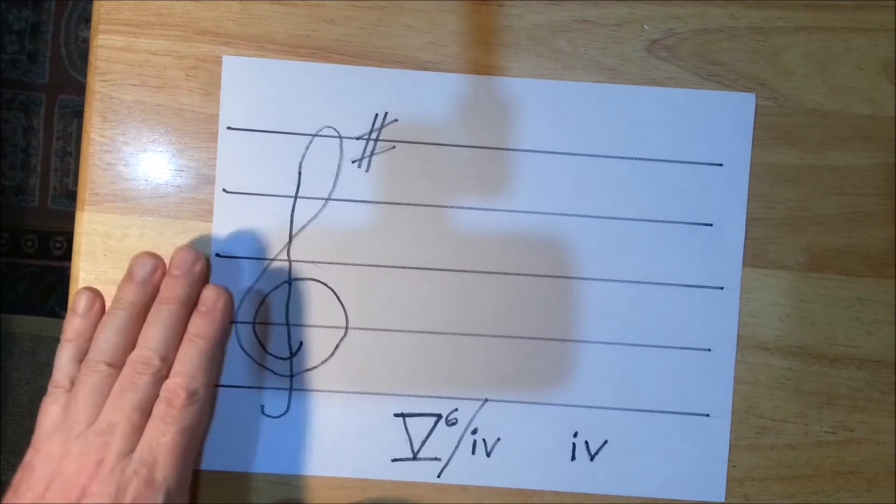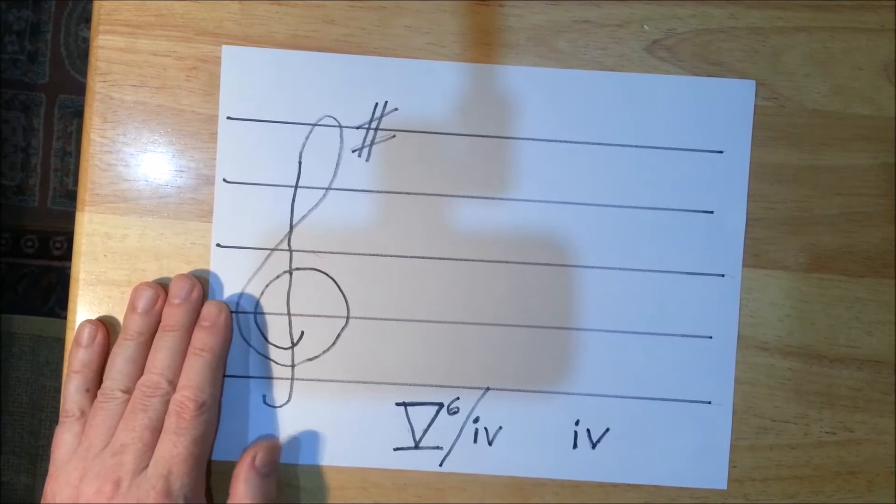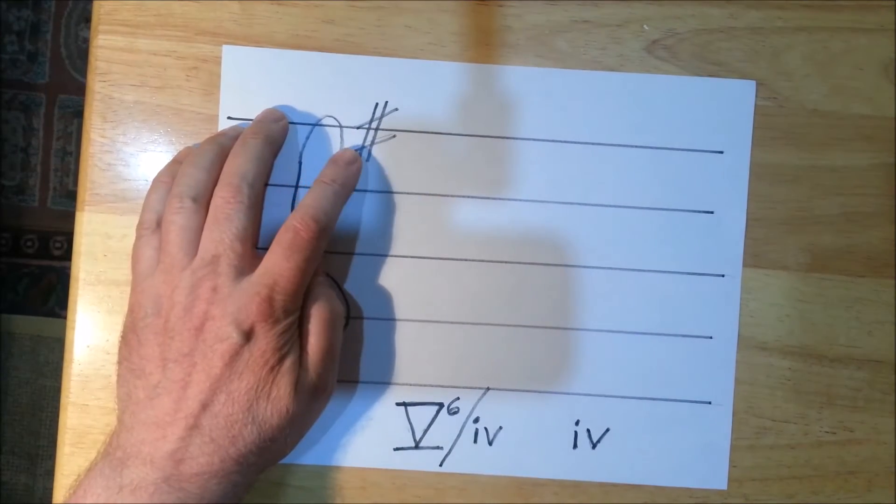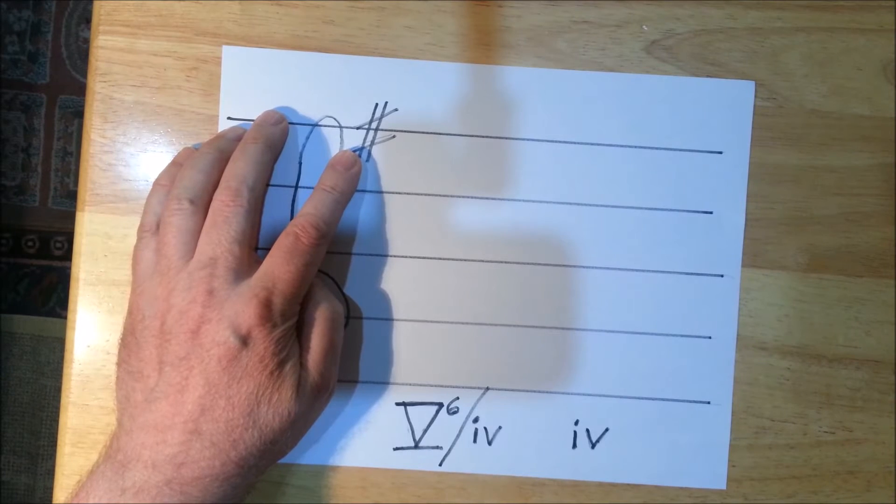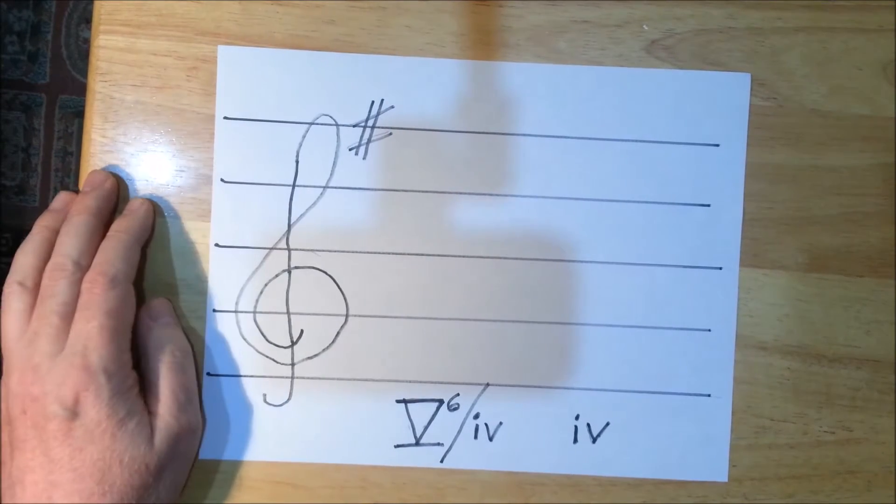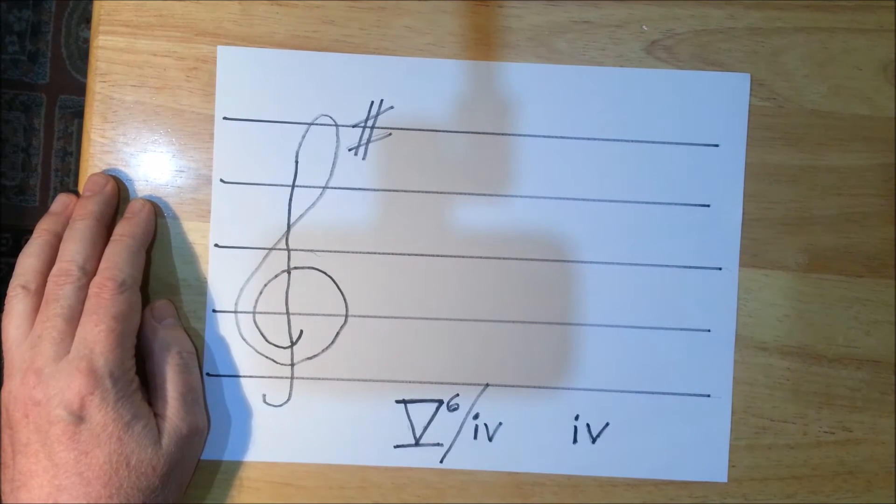I'm going to do an example here and you can see how it works. So the first thing I do is look at the key signature and I see it's one sharp. So one sharp can be either G major or E minor.